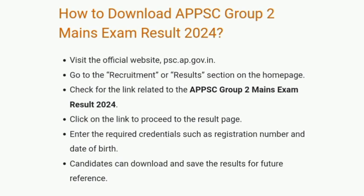Go to the Recruitment or Results section on the homepage. Check for the link related to the APPSC Group 2 Mains Exam Result 2024. Click on the link to proceed to the result page.